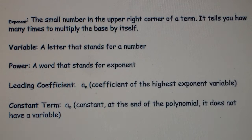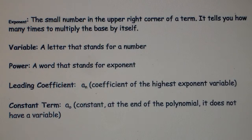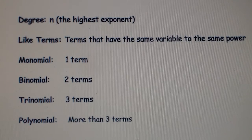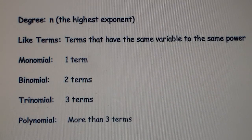The leading coefficient is the coefficient of the highest exponent variable — it's the sign and the number in front when written in standard form. The constant term is when there is no variable written; it's just a sign and a number, and it tends to be at the end of a polynomial when listed from least to greatest power. The degree is the highest exponent. Like terms are terms that have the same variable to the same power, like 2x plus 3x.